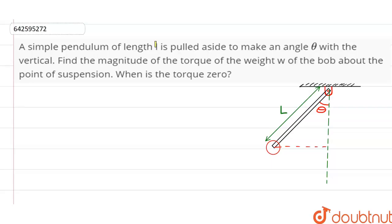A simple pendulum of length L is pulled aside to make an angle theta with the vertical. Find the magnitude of the torque of the weight W of the bob about the point of suspension. When is the torque zero?